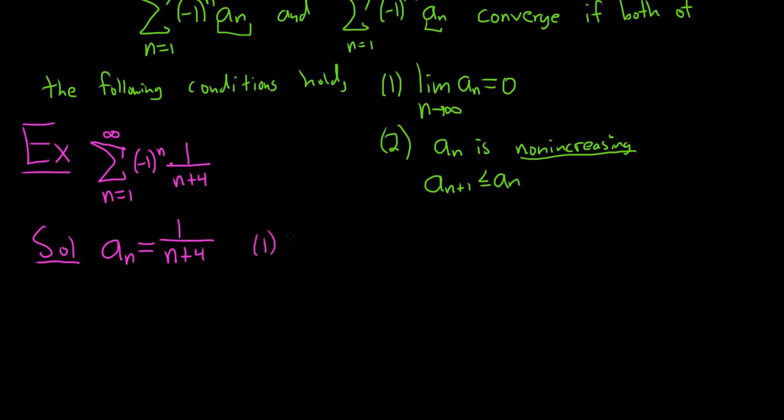Now you just go through the motions. So condition 1 says we take the limit. Limit as n goes to infinity of 1 over n plus 4. This is going to be 0 because the bottom gets big really fast and the top is always 1. So condition 1 checks. Condition 2: you can just look at 1 over n plus 4. You can see that the bigger n gets, the smaller this gets. This is actually a decreasing sequence. So it's certainly non-increasing.